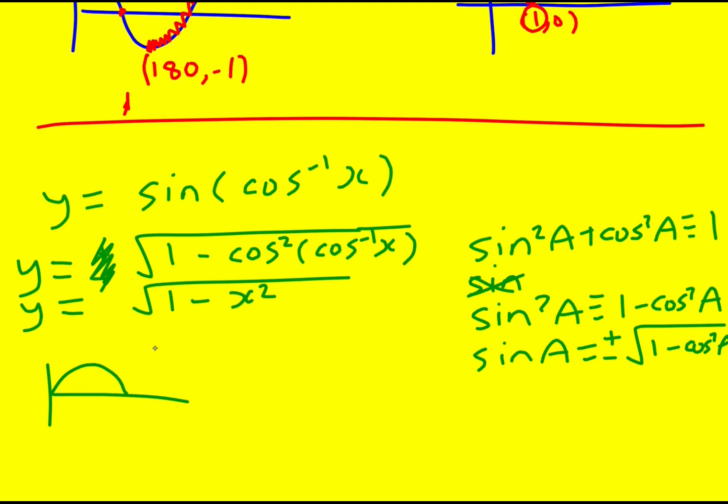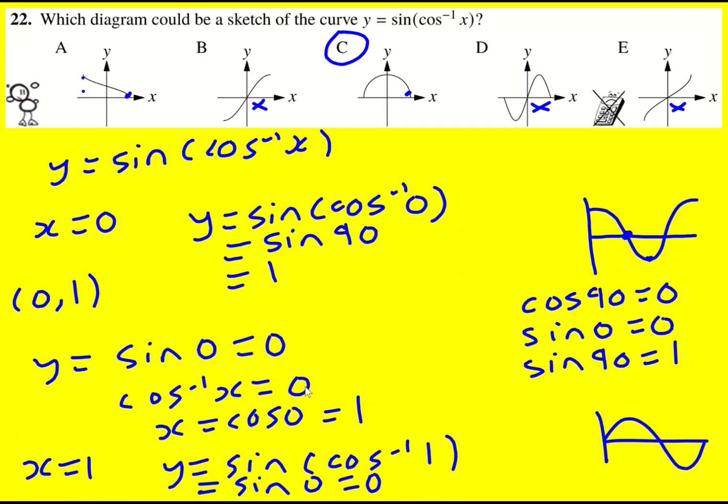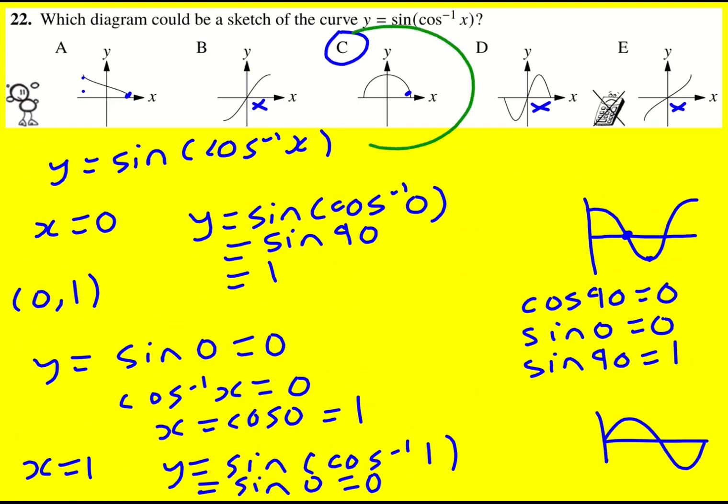Now if you square both sides you get y squared equals one minus x squared. And if you rearrange it you get x squared plus y squared equals one, remembering however that y is always going to be greater or equal to zero. And what this gives us is a circle centered at the origin, but only the top half. And that is why it precisely looks like this.